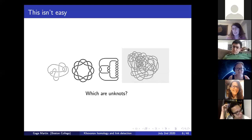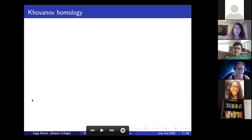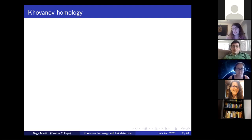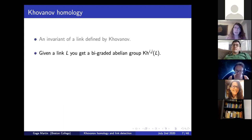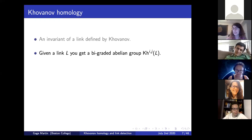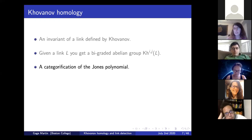This sort of question—can you take a picture and decide if it's an unknot or something like that—is the topological question I want to be thinking about during this talk. Now I can tell you about the tool I'd like to use: Khovanov homology. It's an invariant of a link defined by Khovanov. If you start with a link L, you get a bigraded abelian group called the Khovanov homology of L, coming as the homology of some chain complex. This is a categorified invariant—specifically a categorification of the Jones polynomial.